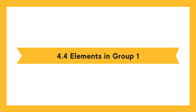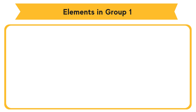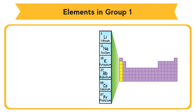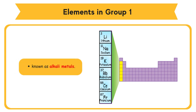4.4 Elements in Group 1. Group 1 elements are located in the vertical column on the left-hand side of the periodic table of elements. Group 1 elements are also known as alkali metals. Lithium (Li), Sodium (Na), Potassium (K), Rubidium (Rb), Caesium (Cs), and Francium (Fr) are Group 1 elements.